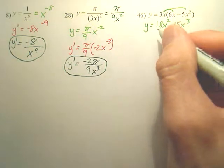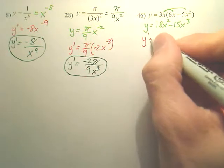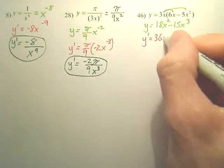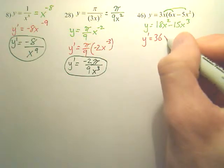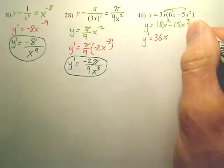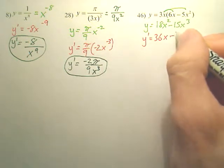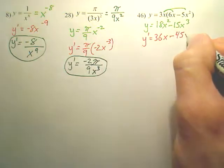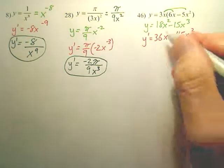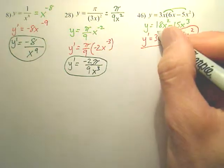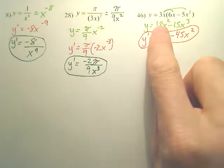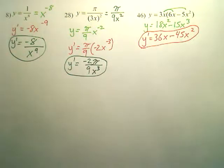Once you distribute, you derive it. So this 2 comes in front, so 18 times 2 is 36. Subtract 1 from 2 is just x, or x to the first. Negative 15 times 3 is negative 45. And subtract 1 from that, it's squared. We're done. That's the derivative. It's as simple as bringing the powers in front, multiplying it by the front number, and then subtracting 1 from the power.